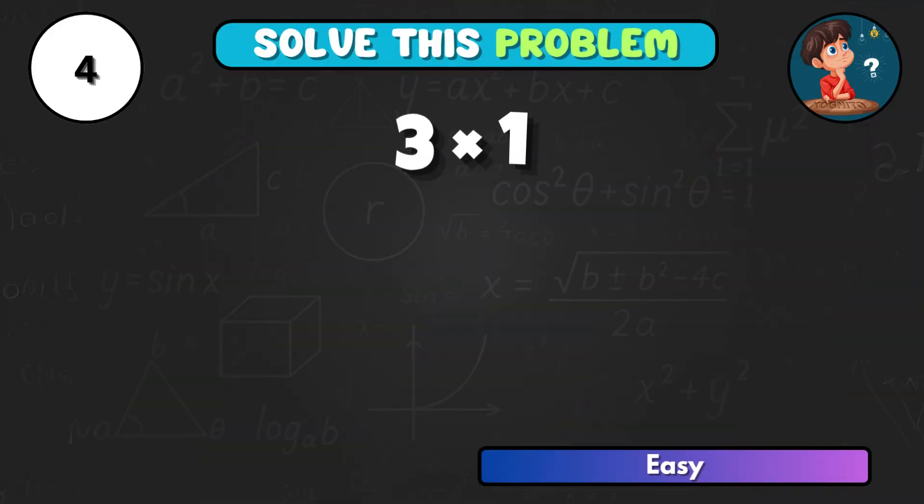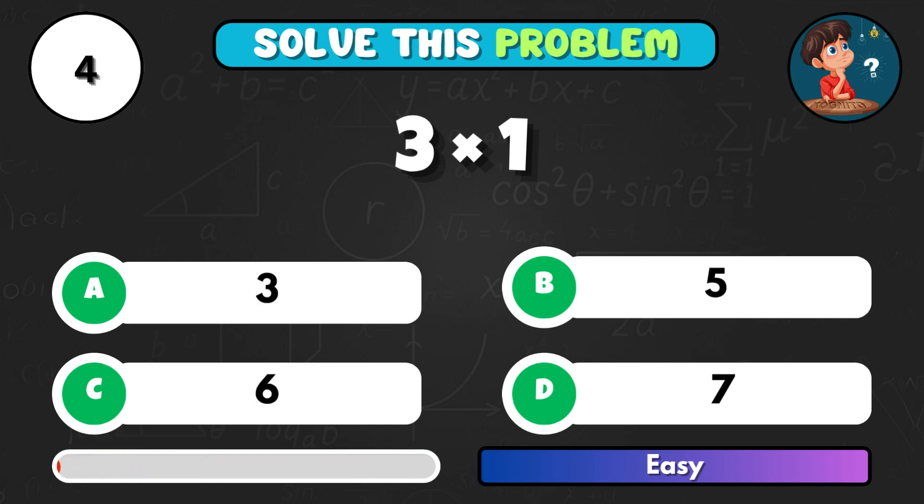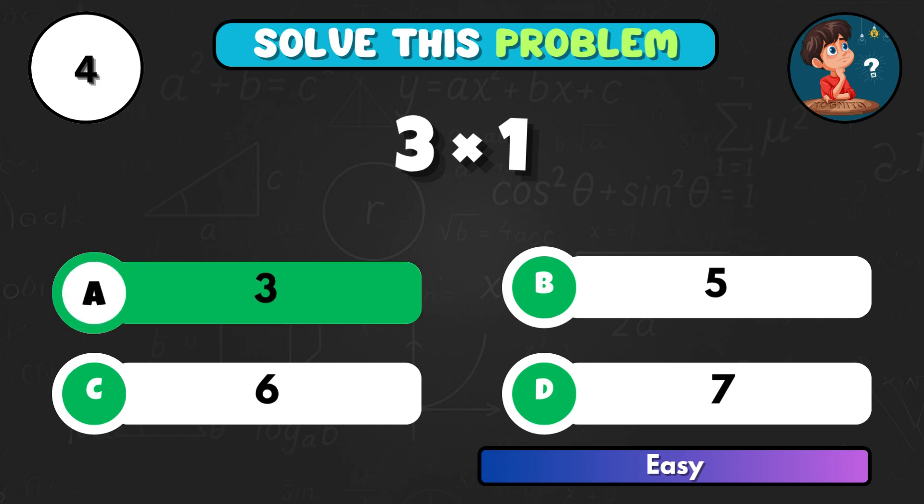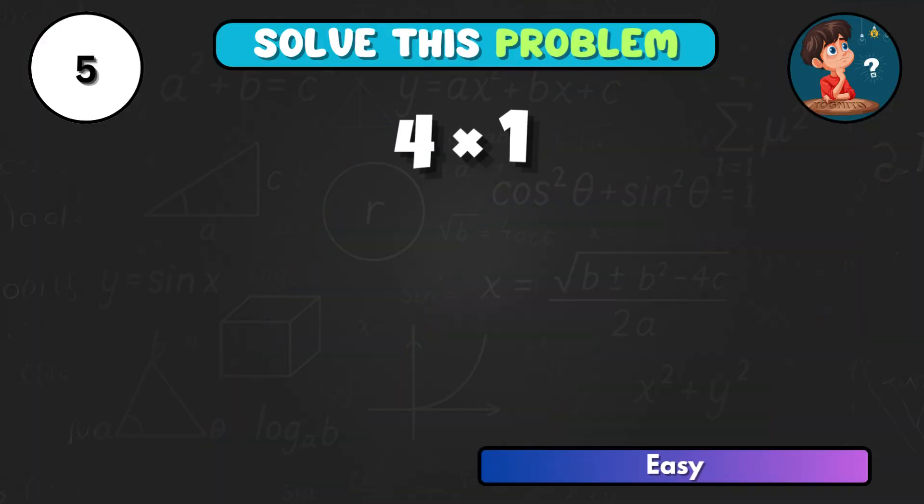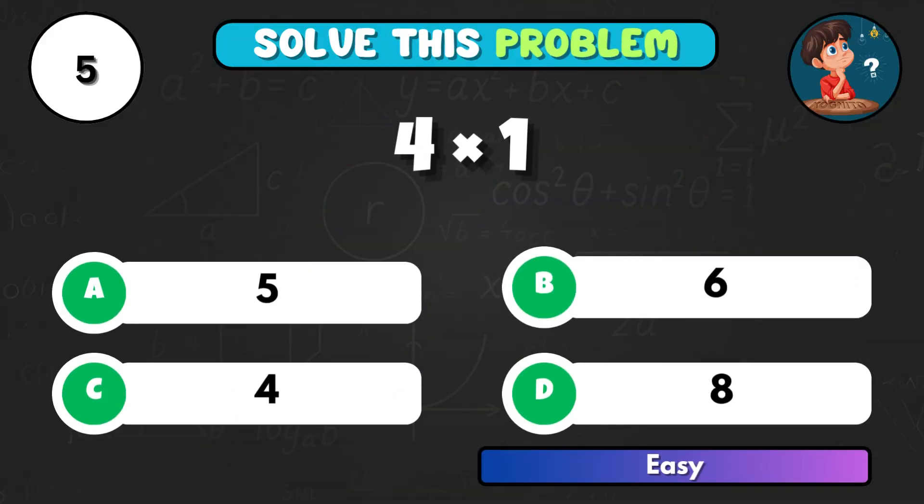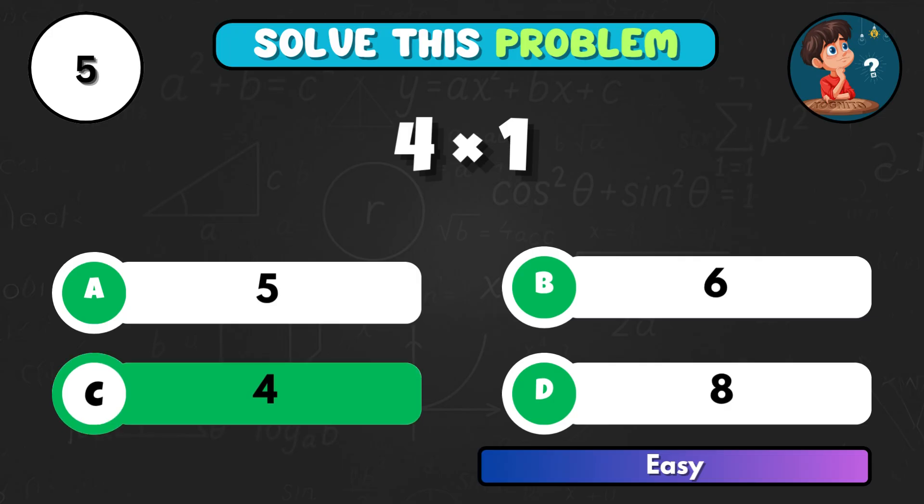Try this one. 3 times 1 equals what? The right answer is A and the result is 3. 4 multiplied by 1, what's the total? Correct choice C, that's 4.